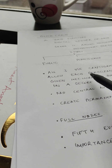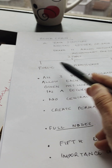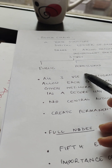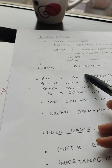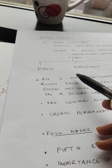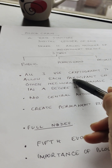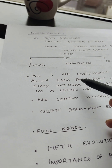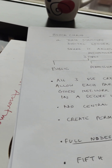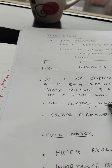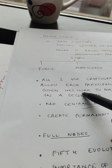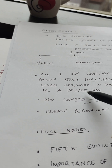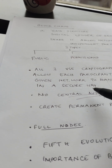Importantly, all three types — public, permissioned, and private — use cryptography to allow each participant on any given network to manage the ledger in a secure way without any need for a central authority to enforce the rules. The removal of central authority from the database structure is one of the most important and powerful aspects of blockchain.